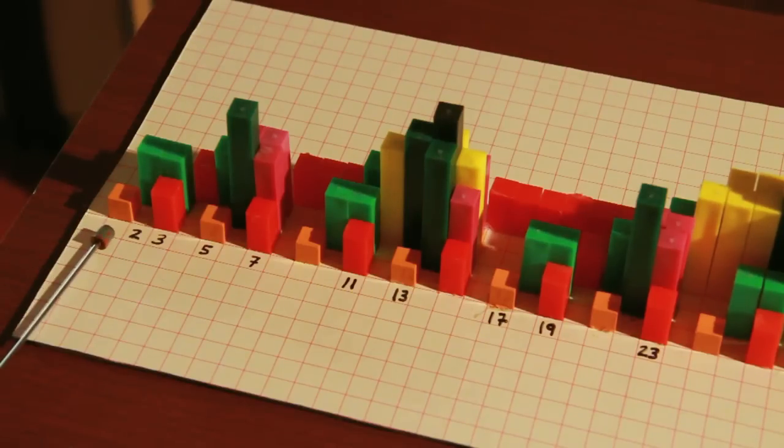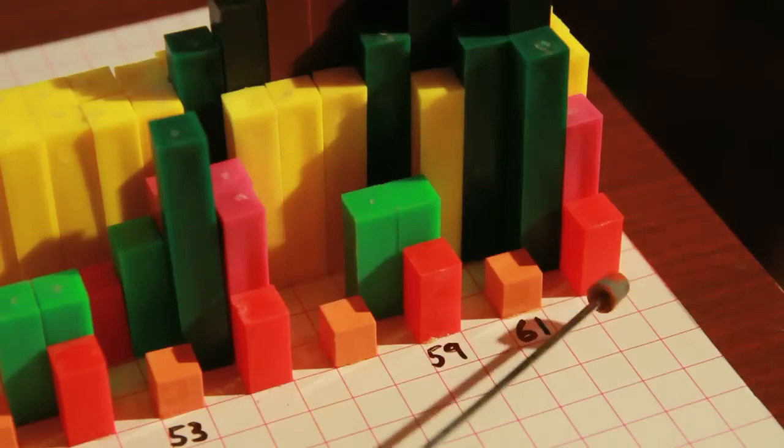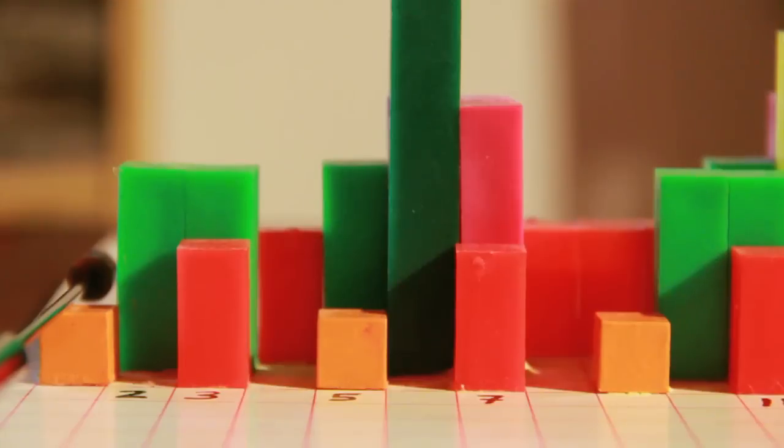What is this? It is a three-dimensional model of the positive integers from 0 to 63. Every integer is represented by a vertical sequence of physical objects. There are two types of objects: cubes and columns.